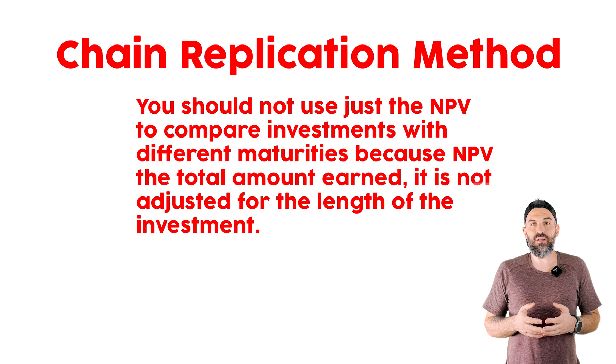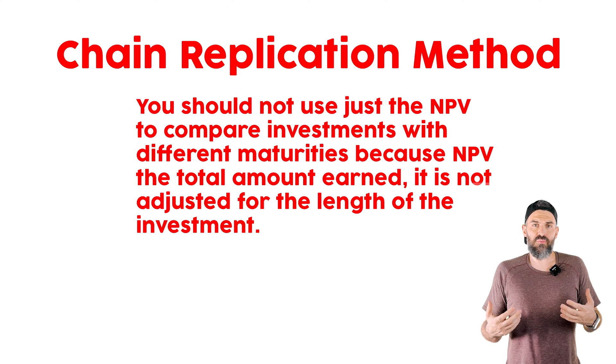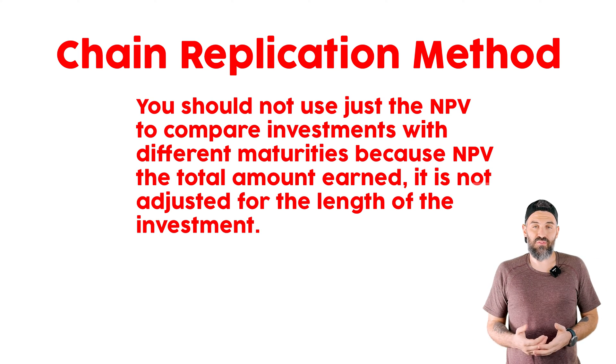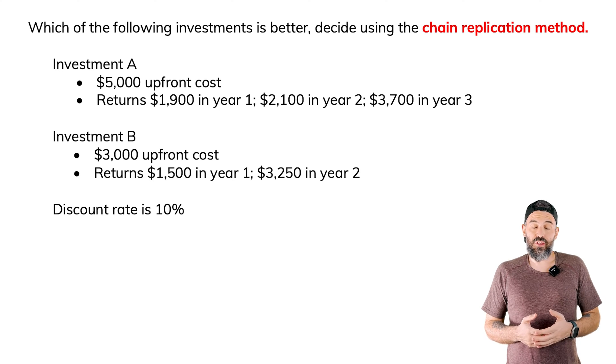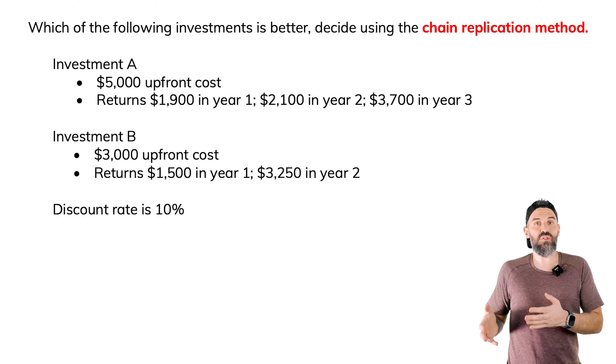The chain replication method is basically a way to take two projects that have different maturities and compare them over an equal amount of time. In this example you have two projects. The first one is a three-year investment and the second one is a two-year investment.